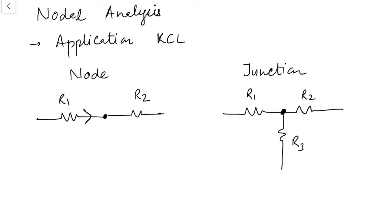If we have three or more branches, obviously there will be current division. If current I1 is flowing towards the node and through R2 and R3 it flows away from the node, we can apply KCL: I1 equals I2 plus I3. So all junctions are nodes, but all nodes are not junctions. We call this method nodal analysis, but we apply KCL only to those nodes which have three or more branches — basically junctions.